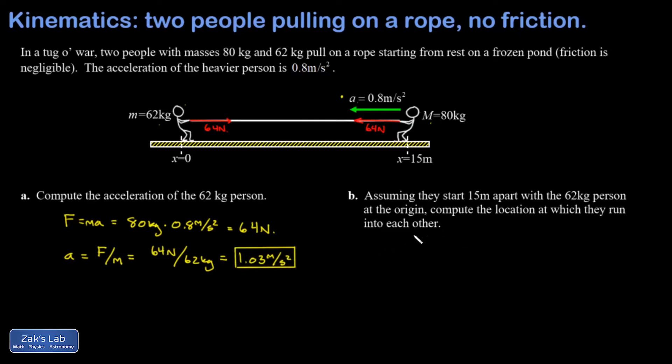In part b we get the kinematics problem. We want to know the location where these two people run into each other. One thing you should be checking for qualitatively is I know the acceleration of the smaller person is going to be a larger number, so when these two people crash into each other it should be right of the midpoint, something bigger than seven and a half meters right of the origin.